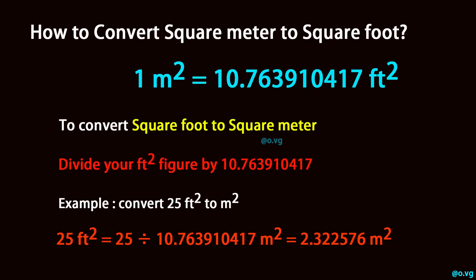To convert square foot to square meter, divide your square foot figure by 10.763910417.